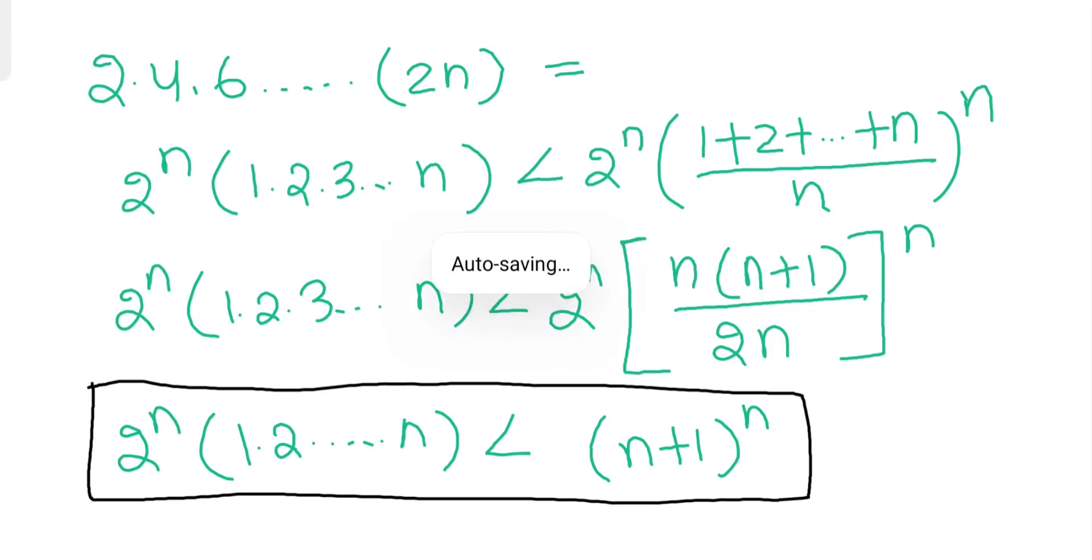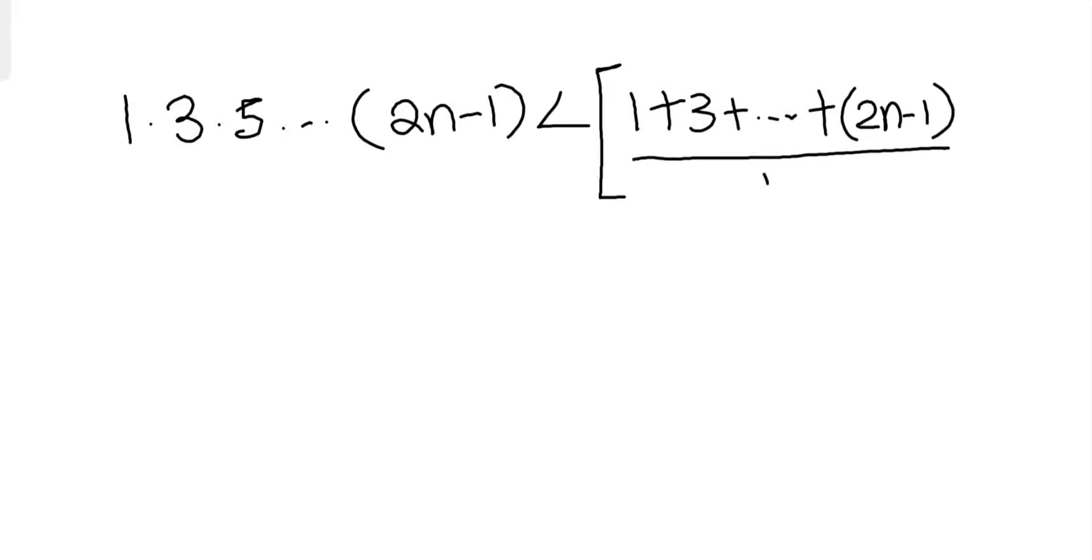Now taking the odd product: 1·3·5...(2n-1) will be less than [(1+3+5+...+(2n-1))/n]^n. Let's simplify and this will be less than...